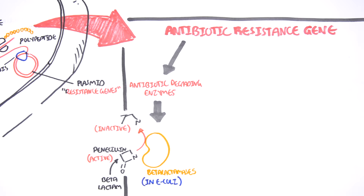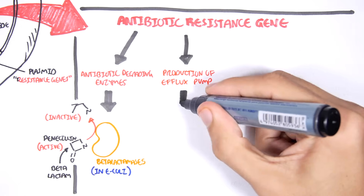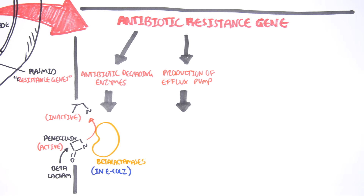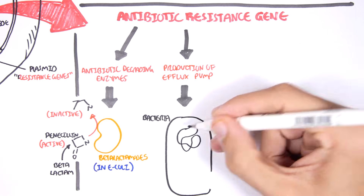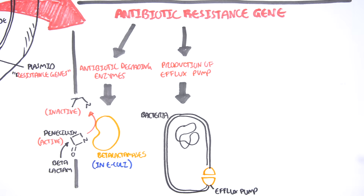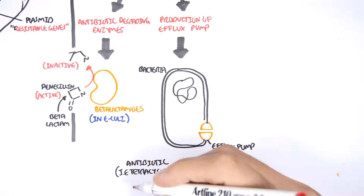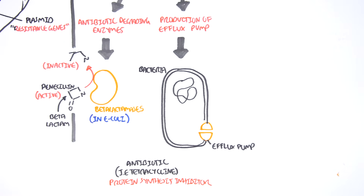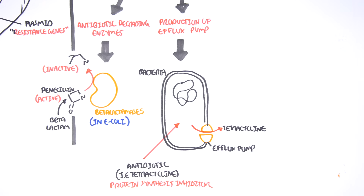The antibiotic-resistant gene of a bacteria may also produce what's called an efflux pump. Imagine this is your bacteria with its cell wall and circular DNA. Some bacteria can produce these efflux pumps, which are found on the membrane. When some types of antibiotics, such as tetracycline — which normally interferes with bacterial protein synthesis — are used, the bacteria can use the efflux pump to pump out the antibiotic. So tetracycline will have no effect on the bacteria because it is pumped out.